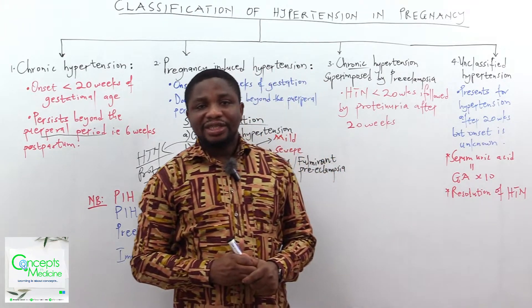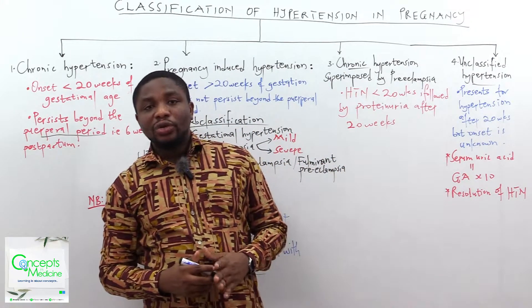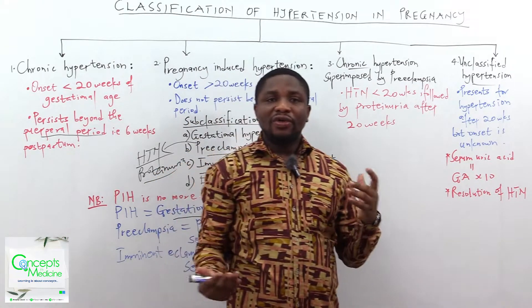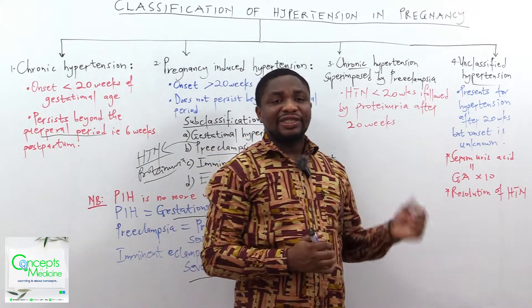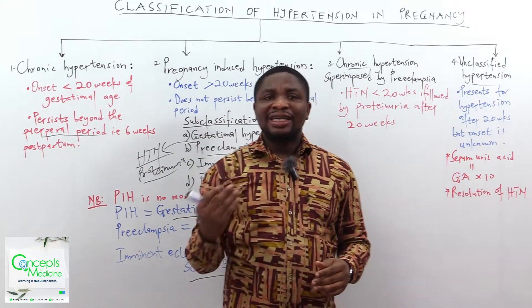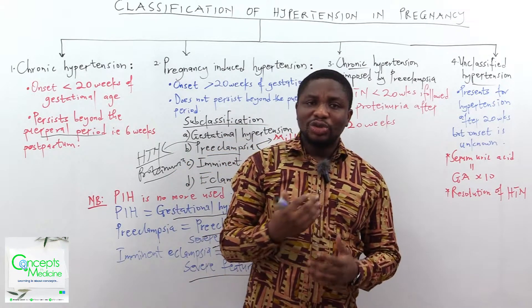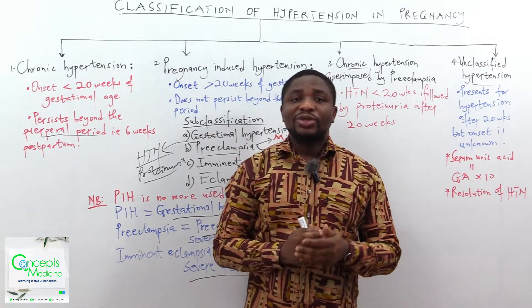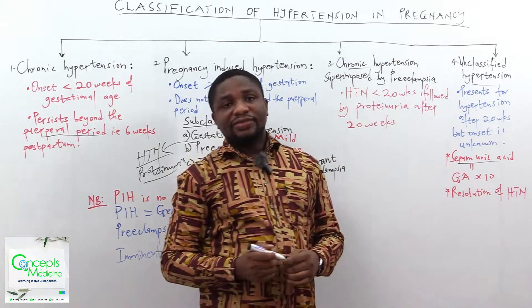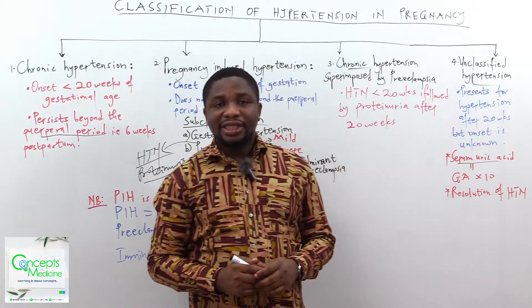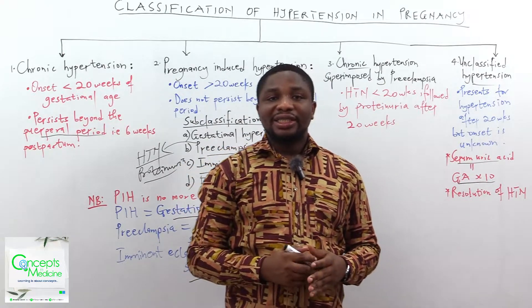Finally, unclassified hypertension means the onset of the hypertension is unknown. The hypertension may happen before or after 20 weeks of gestation, but the onset is unknown. The patient presents with hypertension after 20 weeks — either at antenatal care or the emergency — and the time of onset is unknown. To determine the onset and reclassify, there are two approaches. The first is by looking at the serum uric acid. The threshold serum uric acid is calculated by multiplying the gestational age by 10.